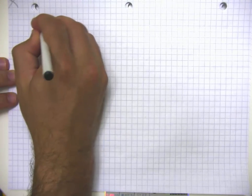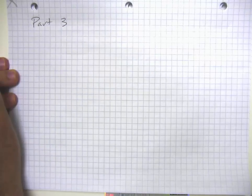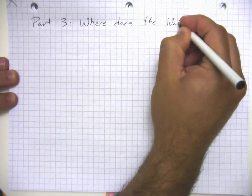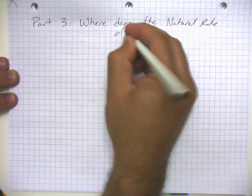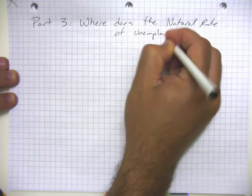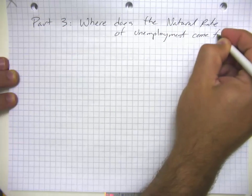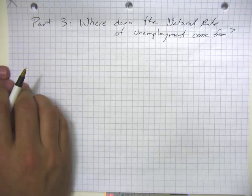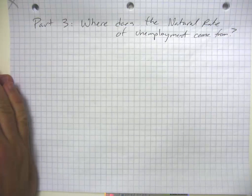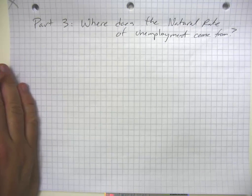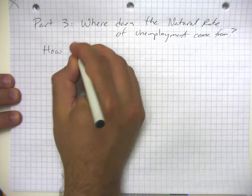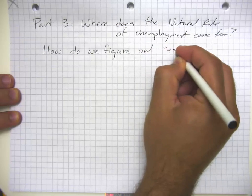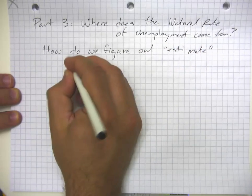In part three on unemployment, I want to ask: where does the natural rate of unemployment come from? There are two different ways we might answer this question. One is how do we figure out what it is, and the other is what influences what the natural rate of unemployment is. The fancy word for 'figure out' here is: how do we estimate the natural rate?